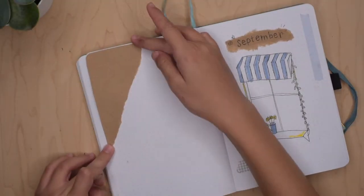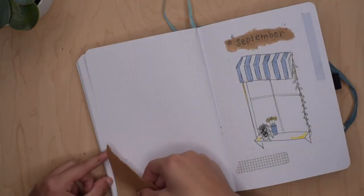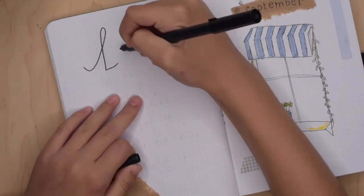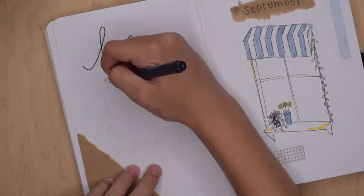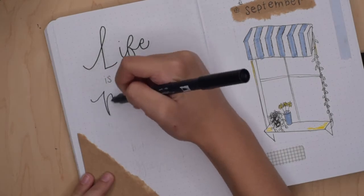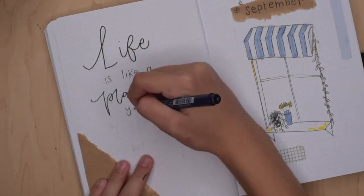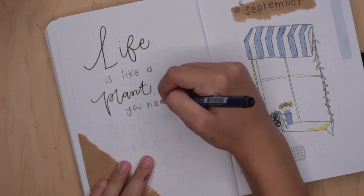Then I wrote it out over some craft paper and I will be incorporating craft paper throughout the theme. Moving on to the quote page, I want to do a quote that had to do with plants.